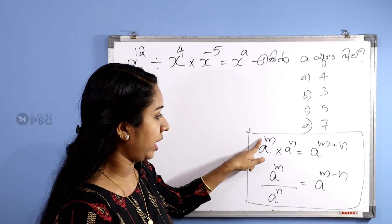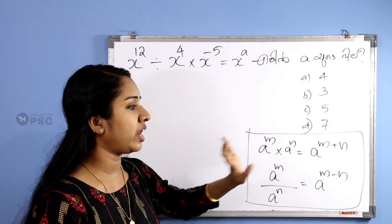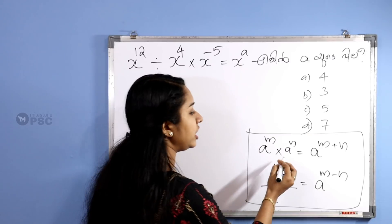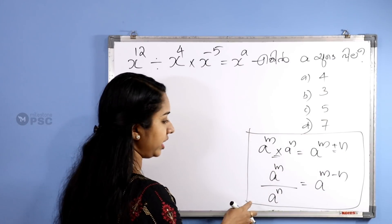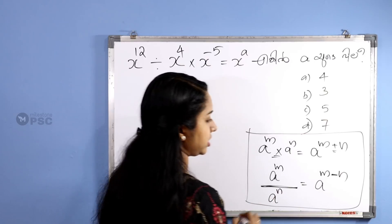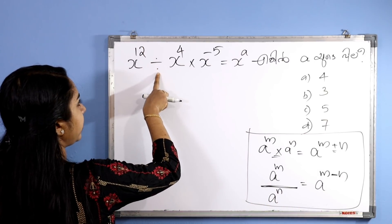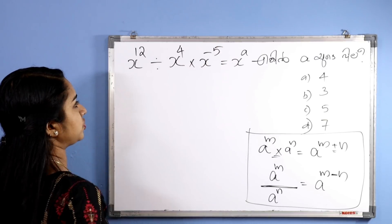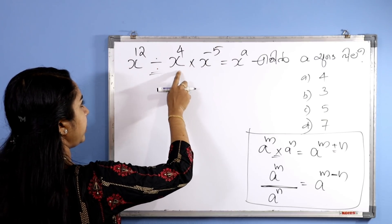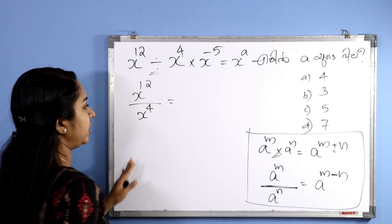A raised to m — we are going to apply the exponent rule. These are the same base. This is the rule: we will use x raised to 12 divided by x raised to 4 into x raised to minus 5.